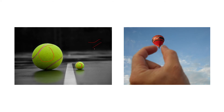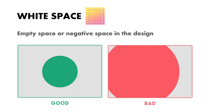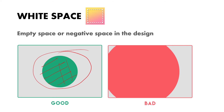In the examples you can see one element is much bigger than another, and the whole image looks good because proportion has been used effectively. Next is white space. White space is the empty or negative space in a design. In a good example, the subject is clear and the background becomes the negative space. In a bad example, it is difficult to identify which area is the negative space, making it an ineffective use of white space.